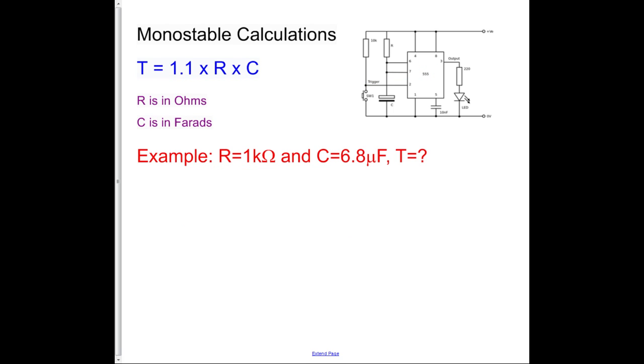Here's the second problem. It's very similar to the first, in that we have a resistor value and a capacitor value, and we're asked to find the time. So in exactly the same way, we go T equals 1.1, writing our component values, 1 times 10 to the 3, which is my 1 kilohm.